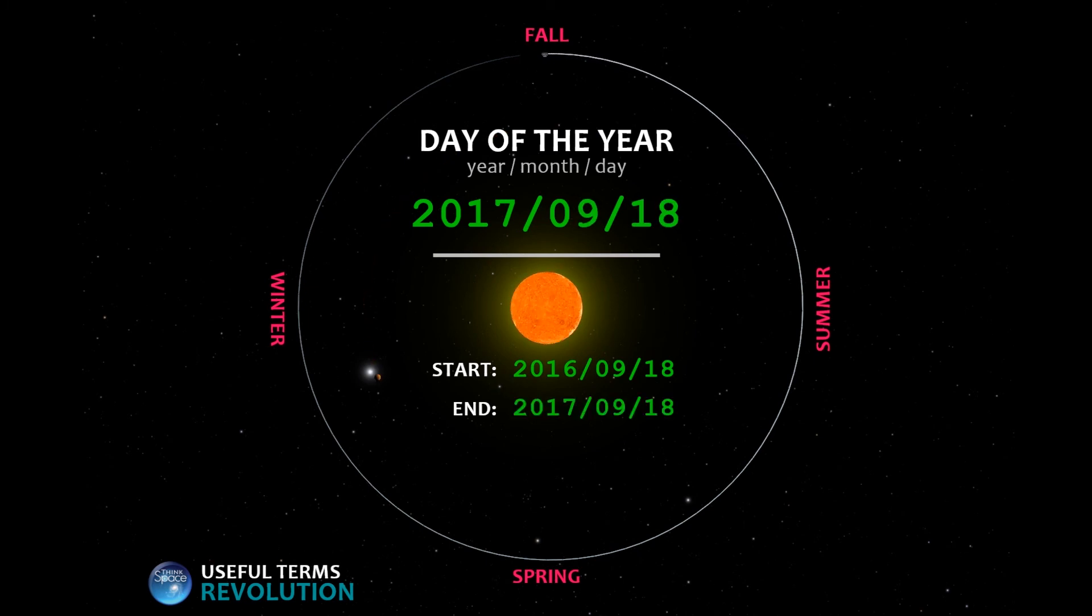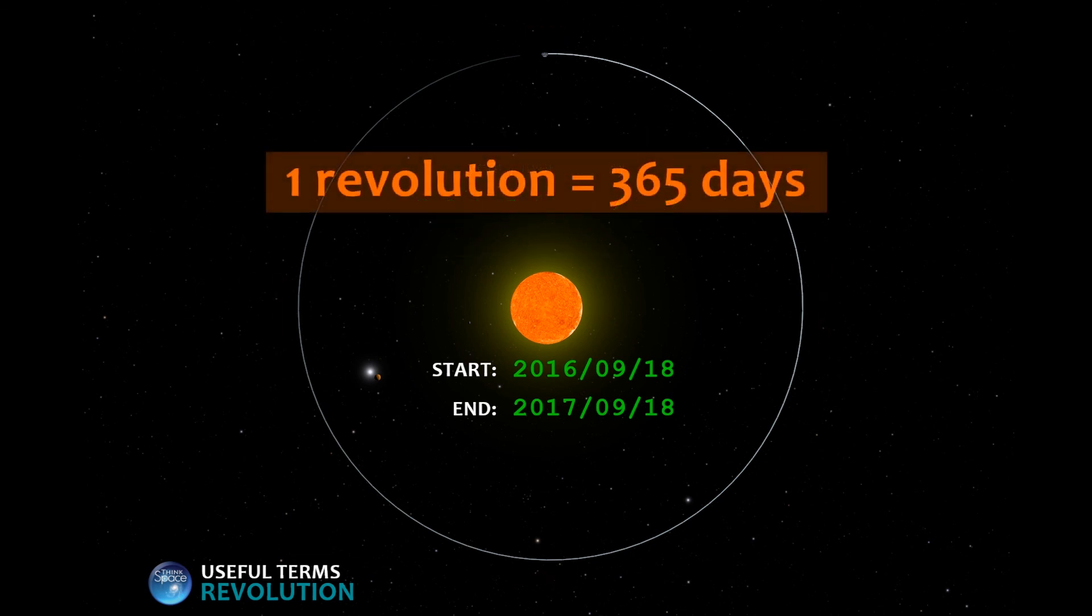And... done! We started on September 18th in 2016, and we completed one revolution on September 18th in 2017. So, one revolution of the Earth around the Sun takes 365 days, which you know as one year.